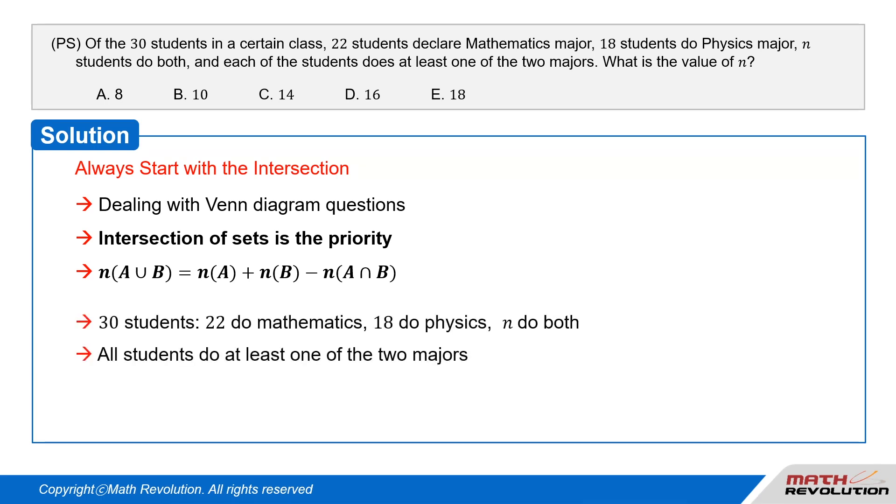There are 30 students, out of which 22 do mathematics major, and 18 students do physics major. Further, n students do both, and all 30 students do at least one of the two majors.